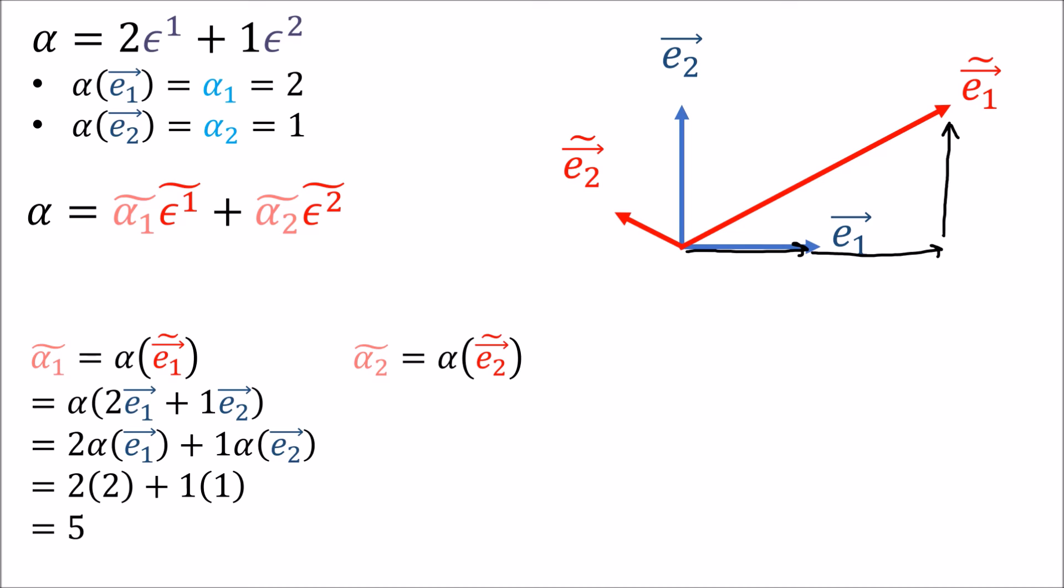We can do the same thing for the second component. ẽ₂ is negative a half e₁ and a quarter e₂. We can use the linearity of alpha and replace these with the components in the old basis, and we get negative three quarters.